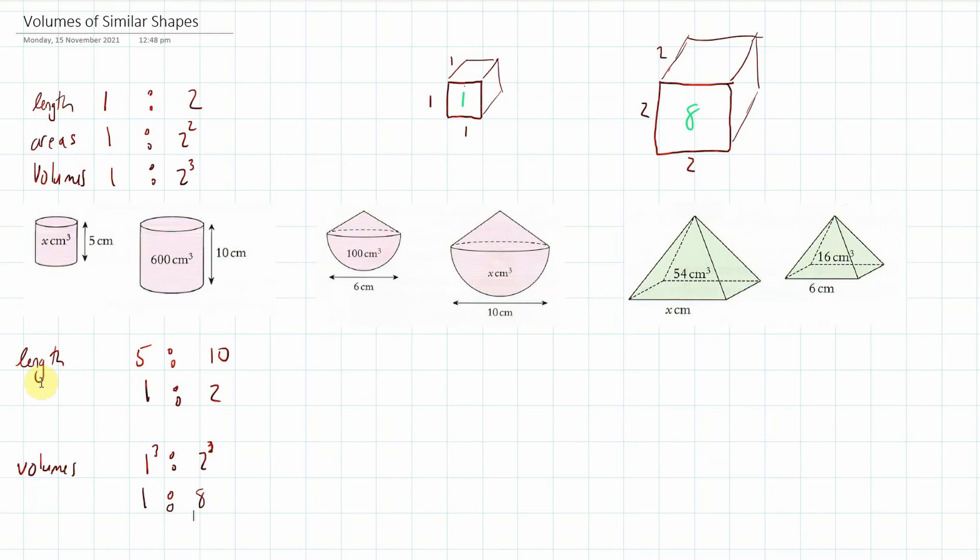Now, if that is the case, that means we can now go, this is the same as x to 600. Those are our volumes. And therefore, how have we gone from here to here? Well, we've timesed by 600 over 8. And so we're going to times this by 600 over 8. Now, what is 600 over 8? It's 75. So x is equal to 75.